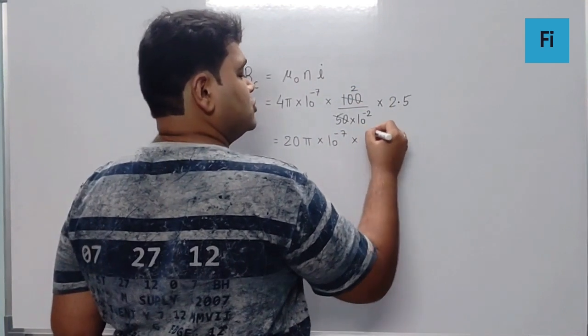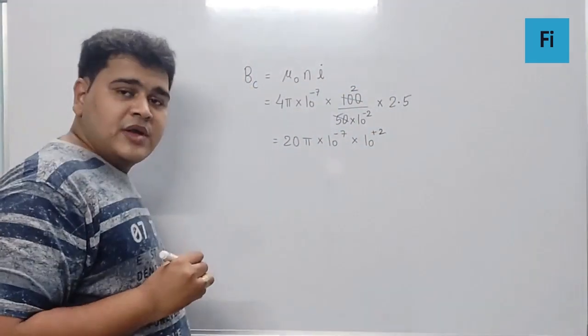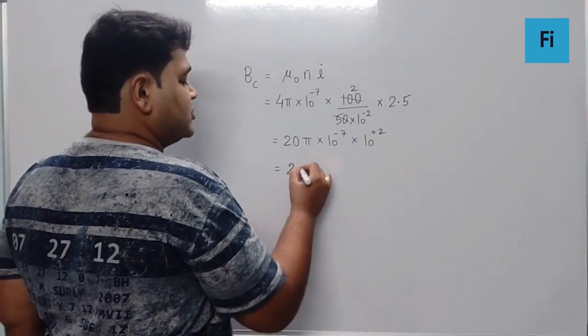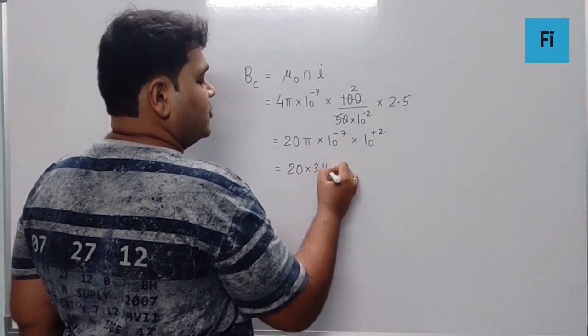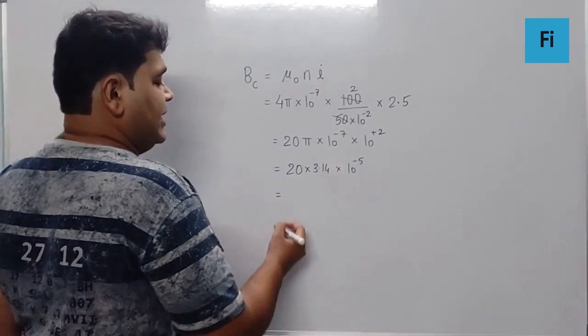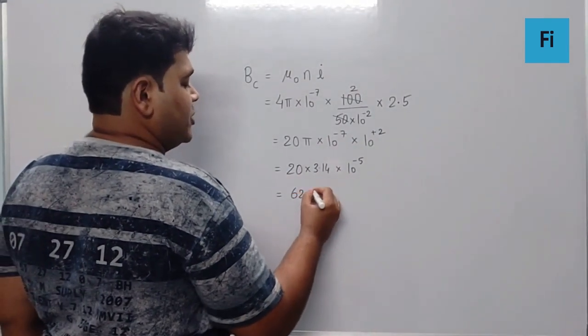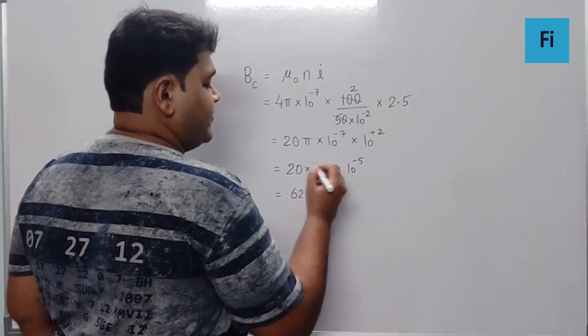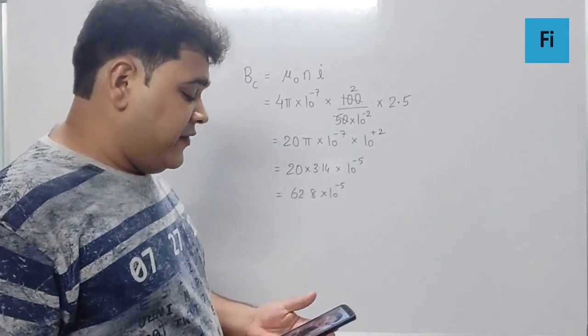Now we can write this as 20 × 3.14 × 10⁻⁵. Here we can write this as 62.8 × 10⁻⁵.